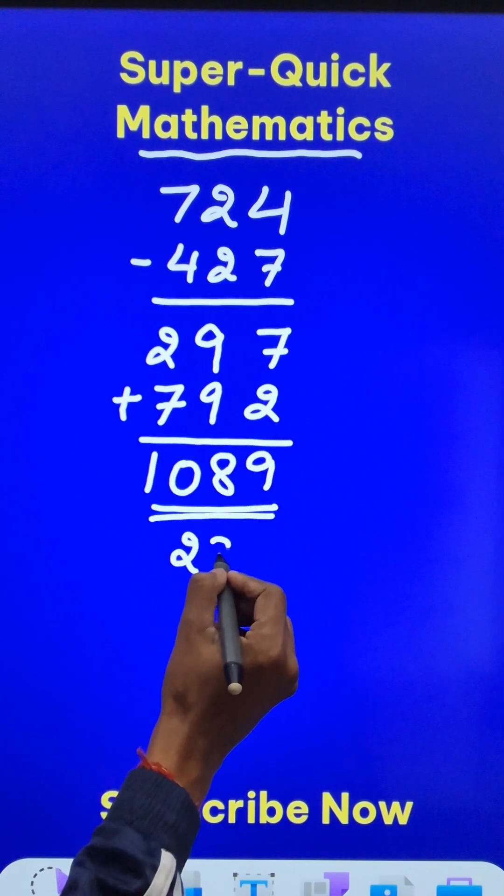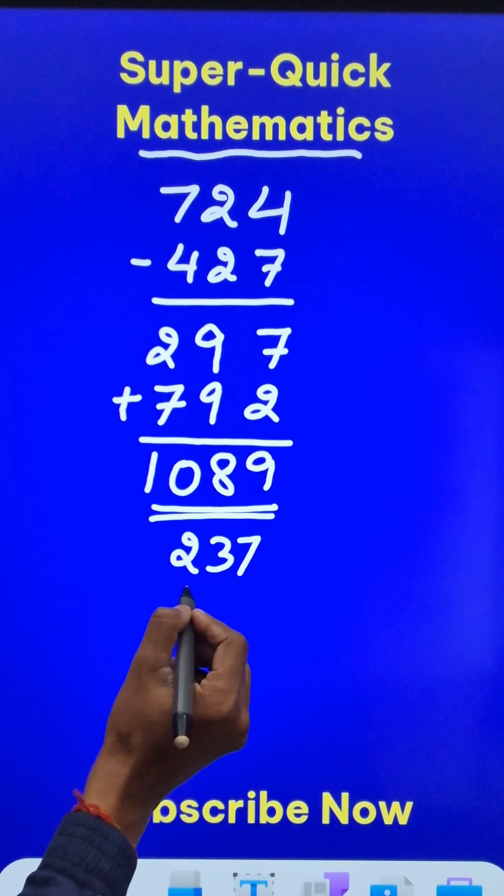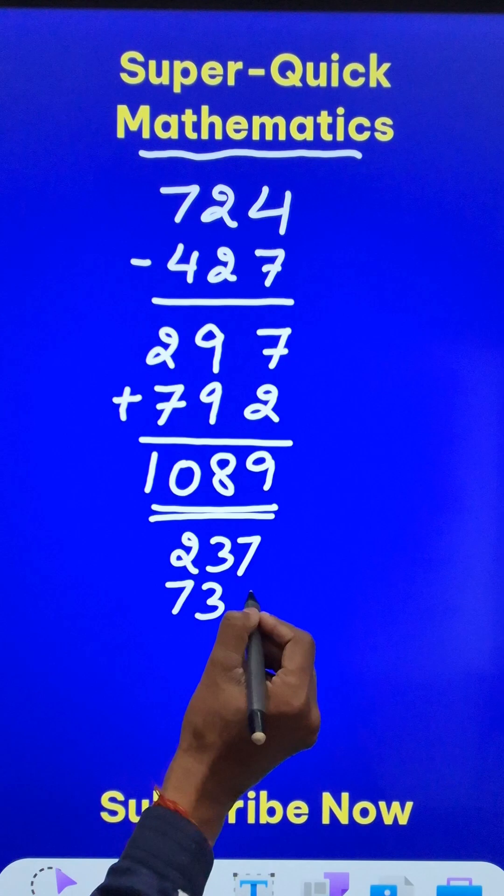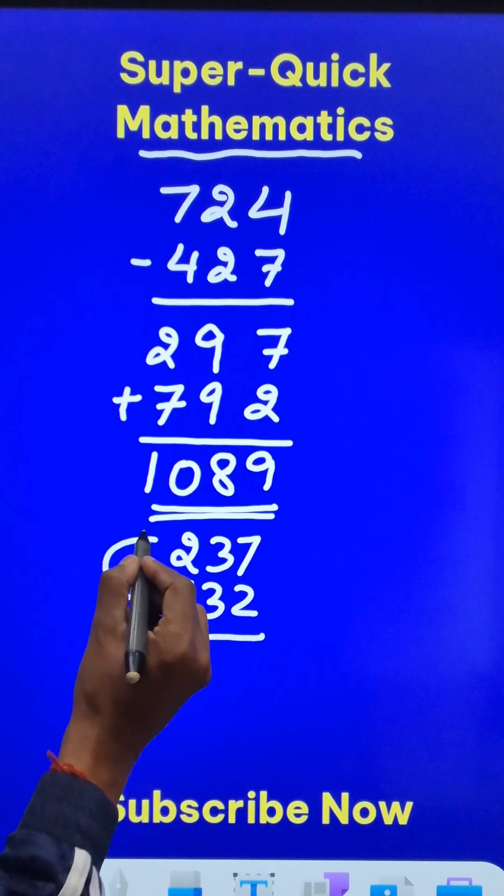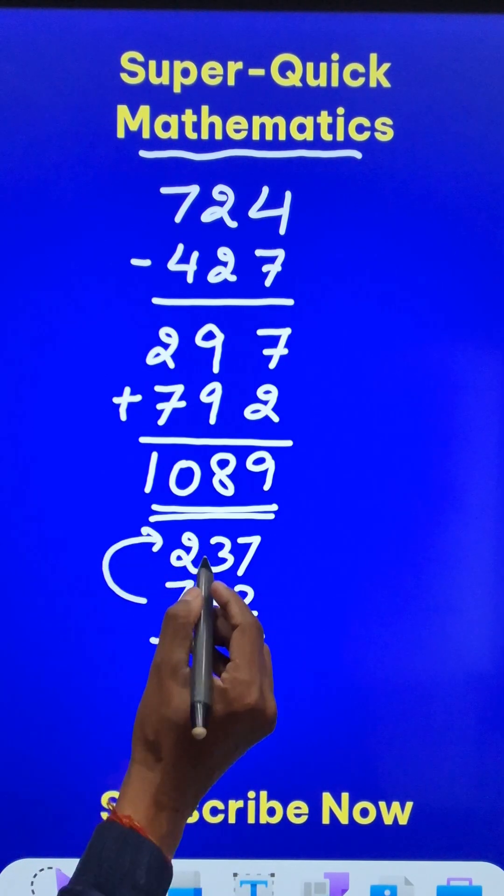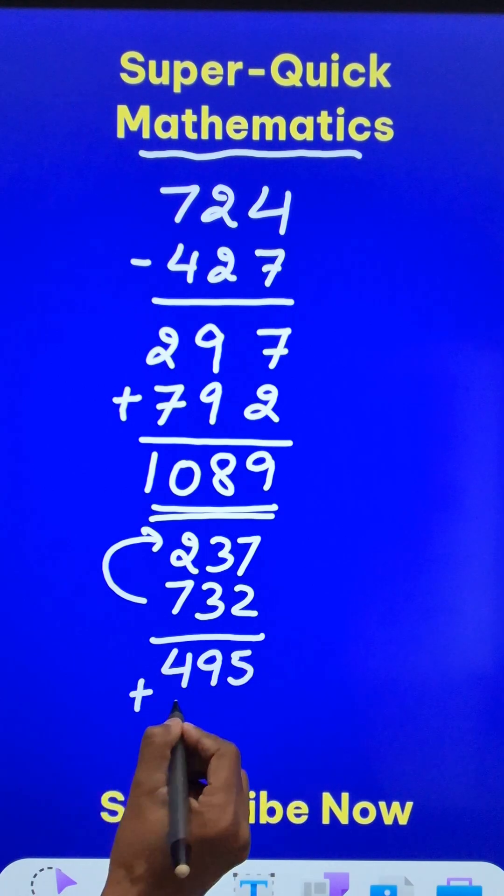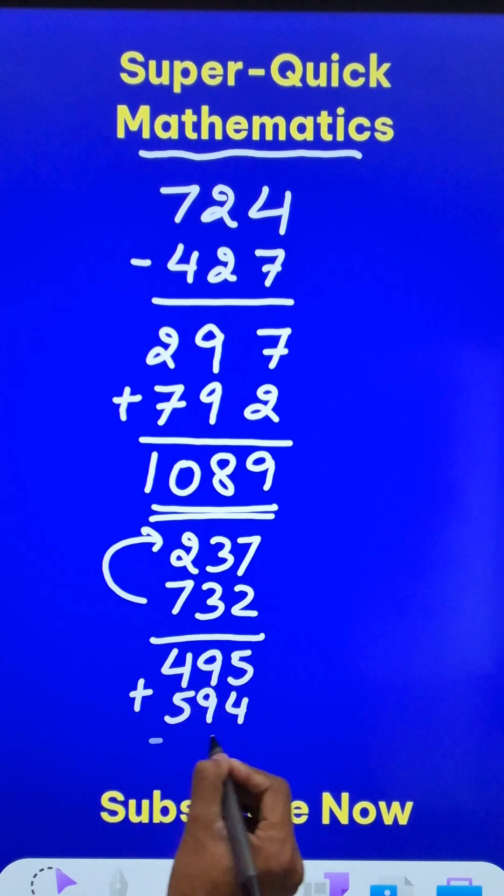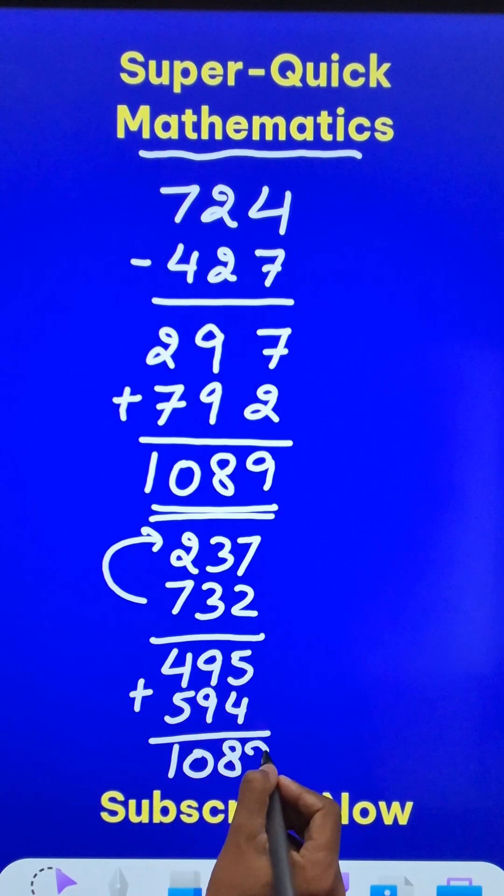Can we try using 237? The number the other way around is 732. Now when you subtract them, that is 732 minus 237, you will get 495. Now when you add 594 to that, again the result is 1089.